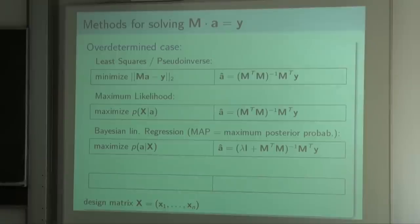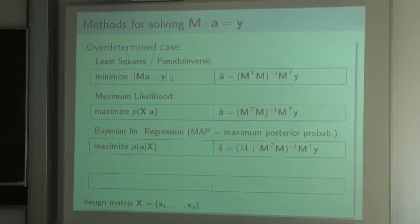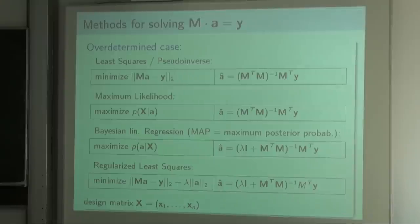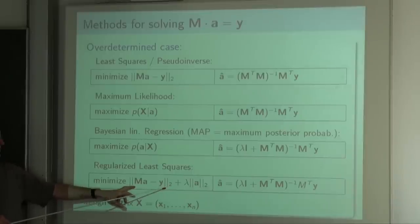This parameter lambda is an open parameter not determined automatically by the method — you as a user have to fix it. At least we can see this as a freedom to reduce overfitting. If you have no idea, you can always use lambda equal to zero and then you have the maximum likelihood solution. If you see overfitting in your results, you can increase lambda a little bit from zero.